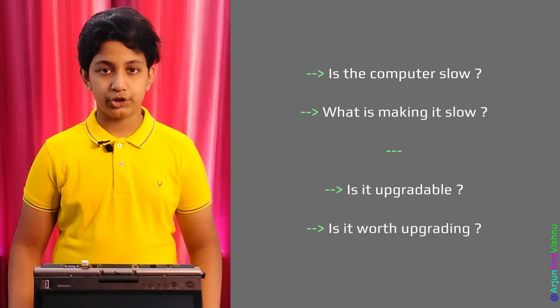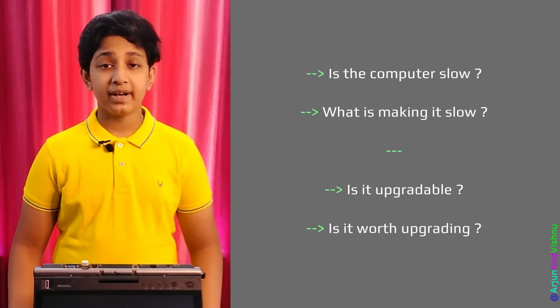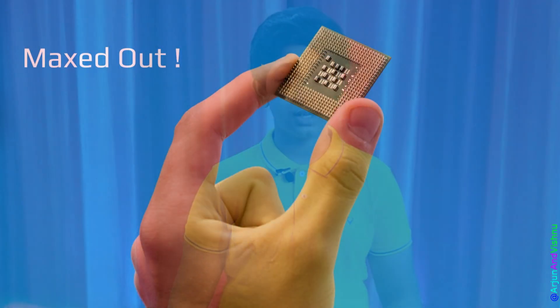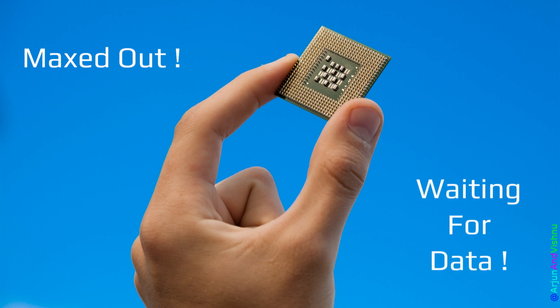Such a systematic approach will either result in money well spent for a good upgrade or money saved in the case of an unnecessary upgrade. The primary reason for slowdown of a computer is because of things happening at the processor. It can be that the processor is maxing out at 100%, or because the processor is spending a majority of time waiting for data from other devices even though it is not maxed out.